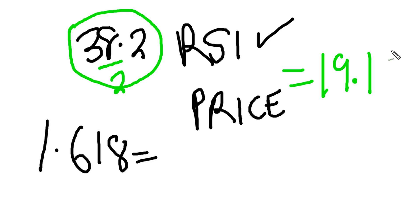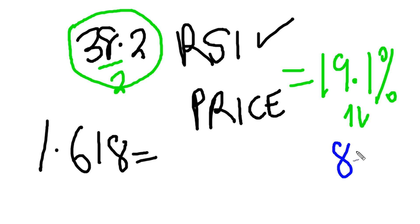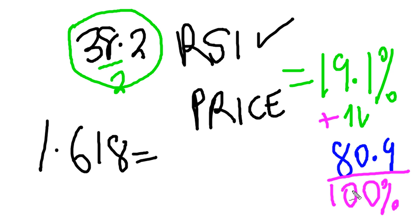19.1 percent — and the opposite of this is 80.9. If you add the two, you end up with 100 percent. What we're gonna do here — I'm gonna give you a quick example of how this can play out in the stock market. What I'm trying to emphasize is there are some levels in the market that people don't talk about, and those are the 19.1 and the 80.9 percentage levels.